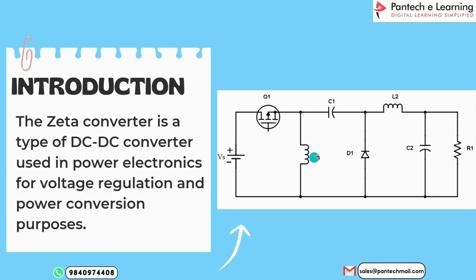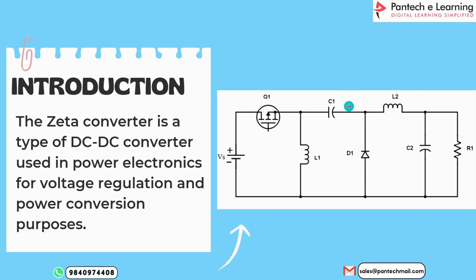The current through both inductors will start increasing and the voltage across capacitor C1 will equal the output voltage V0.